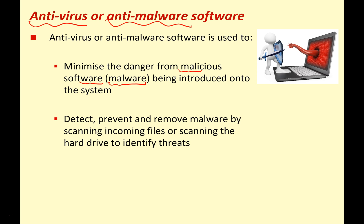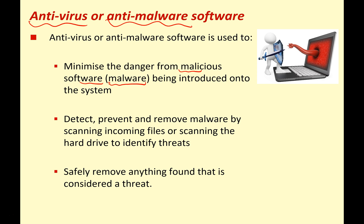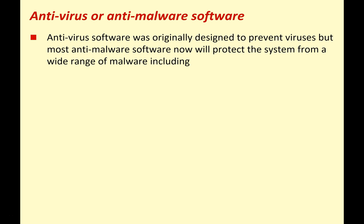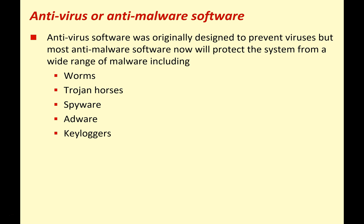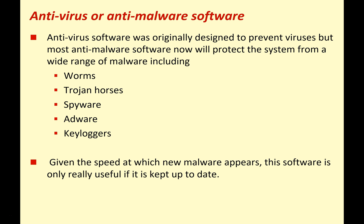Antivirus software was originally designed to prevent viruses, but today what we call antivirus is really anti-malware, protecting your system from worms, trojans, spyware, adware, keyloggers, and many other types of bad programs. Given the speed at which new malicious software appears, antivirus software is only useful if it's kept up to date — you must constantly download new definitions so it can recognize new bad programs and prevent them getting into your system.